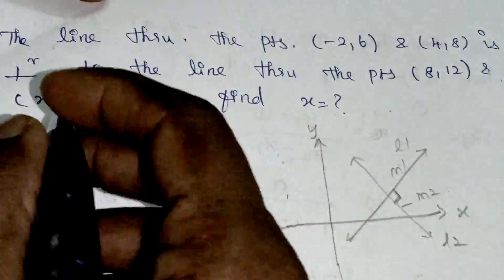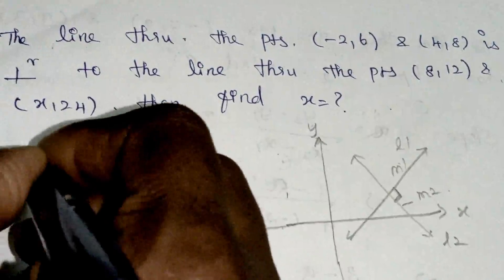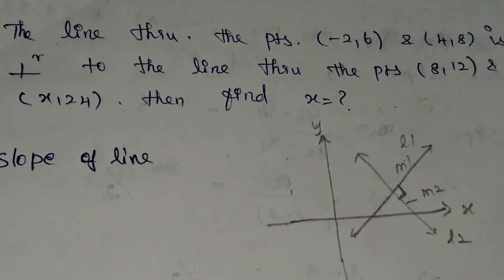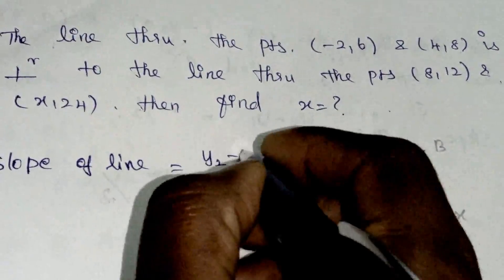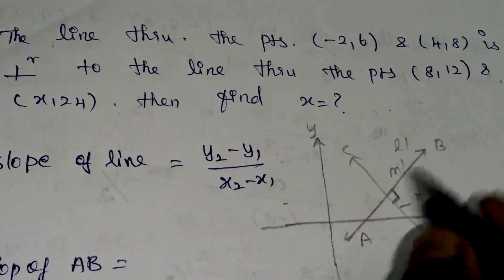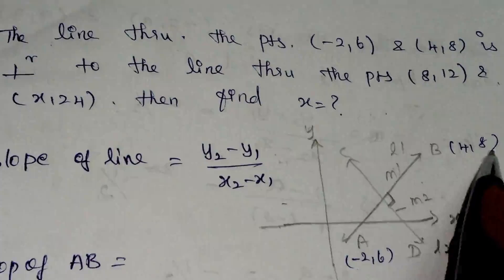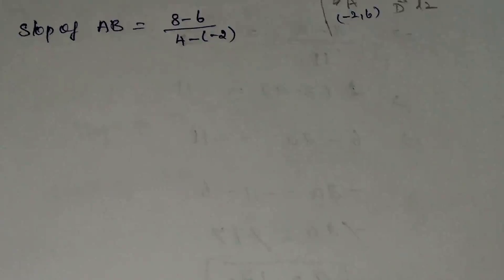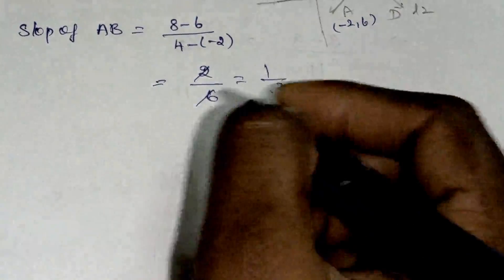For Line 1, the slope formula is y2 minus y1 divided by x2 minus x1. The points are minus 2 comma 6 and 4 comma 8, so x1 is minus 2, y1 is 6, x2 is 4, y2 is 8. The slope is 8 minus 6 divided by 4 minus minus 2, which gives 2 divided by 4 plus 2, which is 2 by 6. Simplifying, we get 1 by 3. So m1 is equal to 1 by 3.